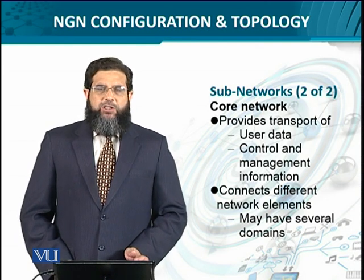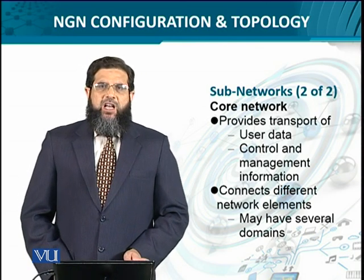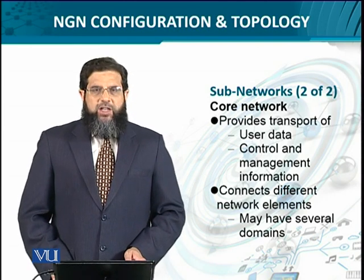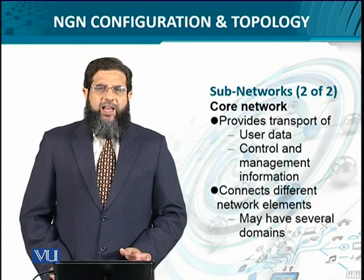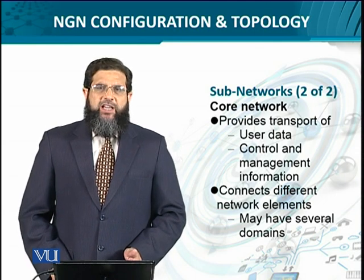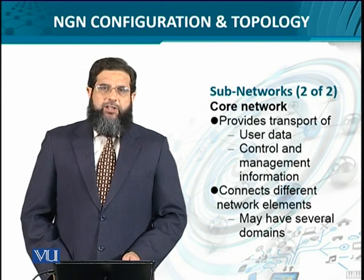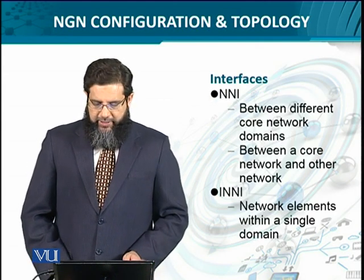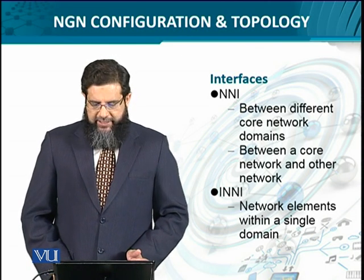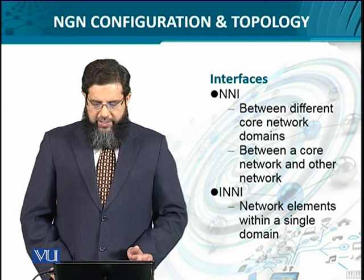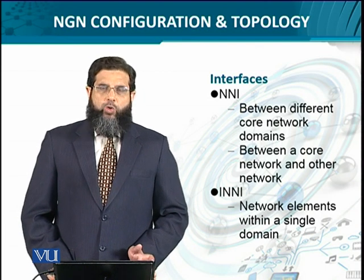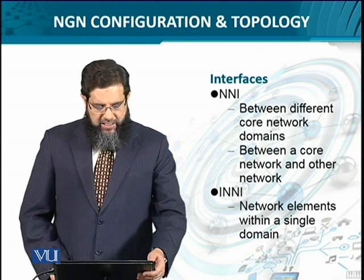The core network handles transmission of user data and also transmits control and management information. Core networks are connected to different network elements on the access side, so they can have different domain connectivities — domain 1 spans both the access and core sides, while domain 2 and domain 3 exist on the core and access sides. The network-to-network interface is used between different core network domains or between a core and access network belonging to different administrative domains, while the internal network-to-network interface is used within a single administrative domain.